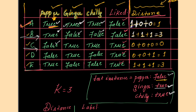For row 3: pepper is false in the dataset and false in the test instance — both are same, so 0. Ginger is true and true — both are same, so 0. Chili is true and true — both are same, so 0. Total distance is 0. For row 4: pepper false vs false — same, 0. Ginger true vs true — same, 0. Chili false vs true — different, so 1. Total: 0 + 0 + 1 = 1.